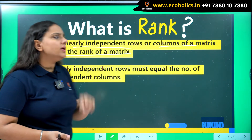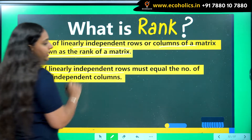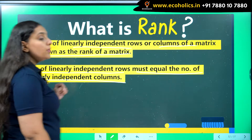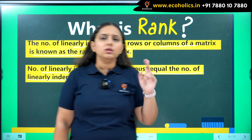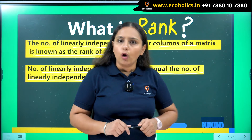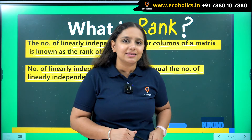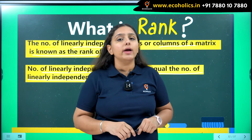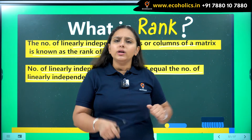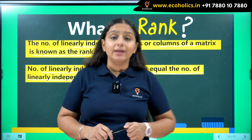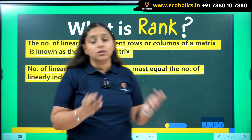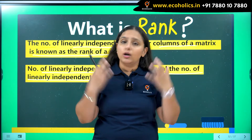In other words, rank means how many rows are independent and how many columns are independent. One thing to keep in mind: the number of linearly independent rows must equal the number of linearly independent columns. What if independent rows are 3 but independent columns are 2 — do you write 3 or 2? This is why we need the exact count, and it's a common phenomenon that they are not equal.